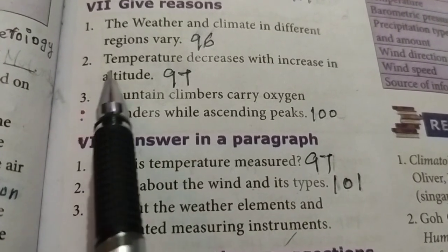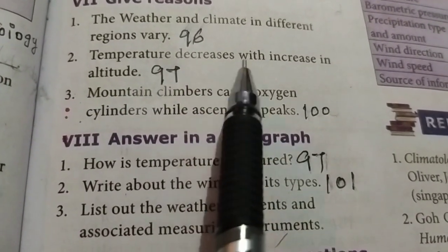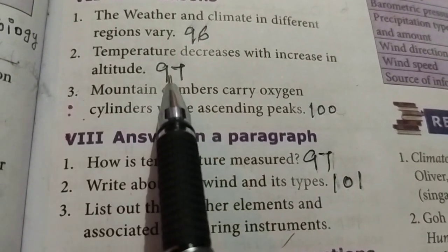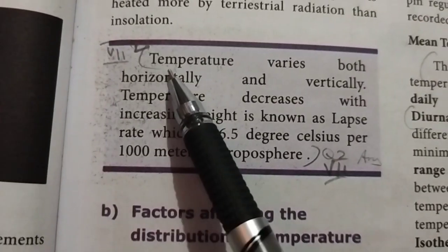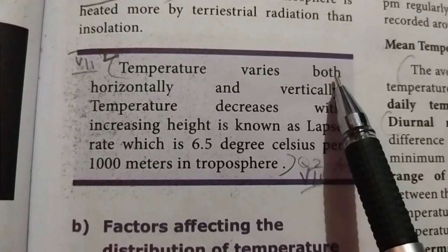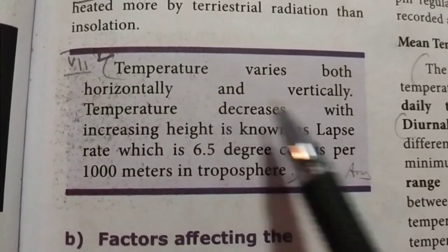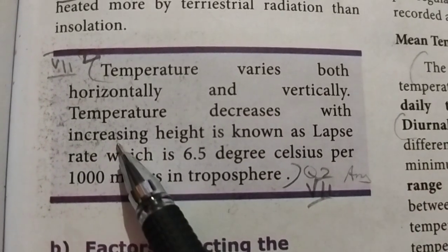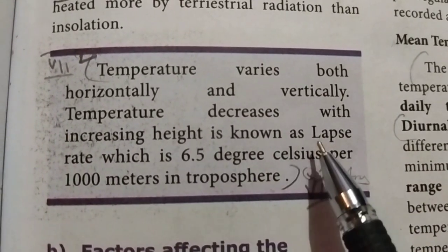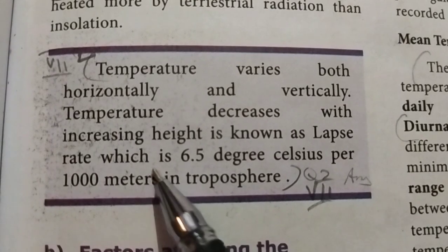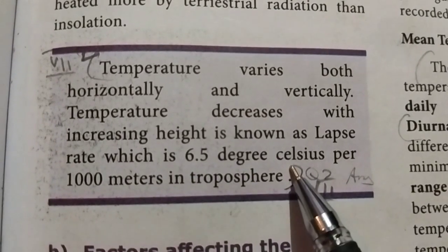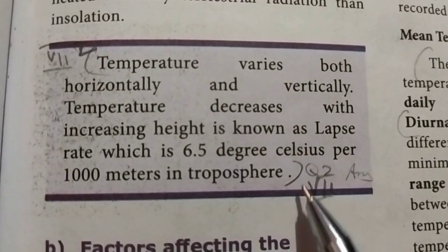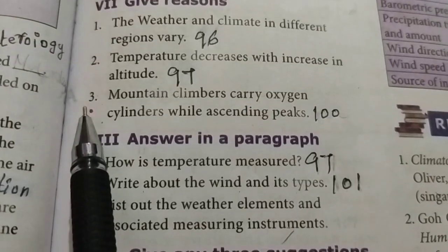Number 2: Temperature decreases with increases in altitude. Take page 97. Temperature varies both horizontally and vertically. Temperature decrease with increasing height is known as the lapse rate, which is 6.5 degrees Celsius per 1000 meters in the troposphere.